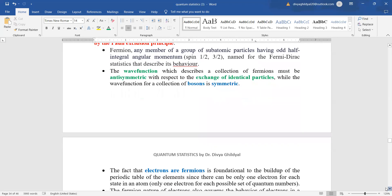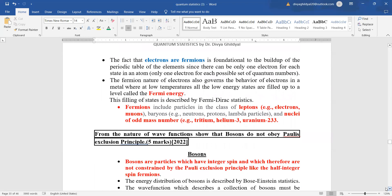The fact that electrons are fermions is foundational to the build-up of the periodic table of the elements because there can be only one electron for each state in an atom. The fermion nature of electron also governs the behavior of electrons in the metal where at low temperature all the low energy states are filled up by a level called the Fermi energy. This has also been discussed in great detail under Maxwell-Boltzmann statistics. The filling up of states is described by Fermi-Dirac statistics which has also been discussed.